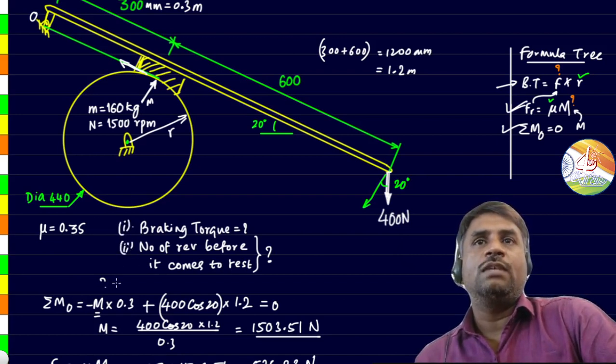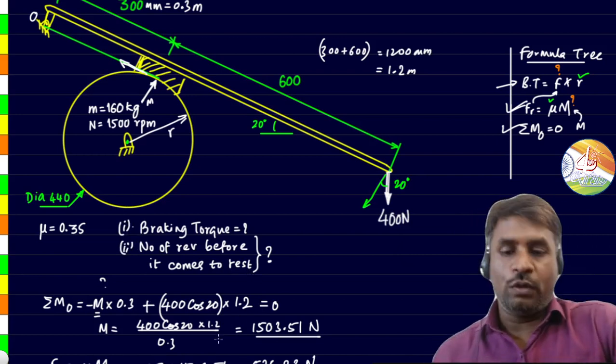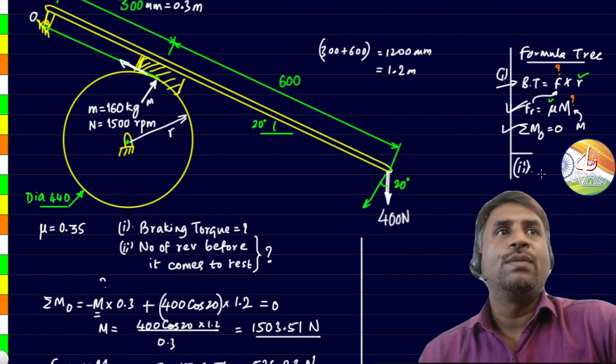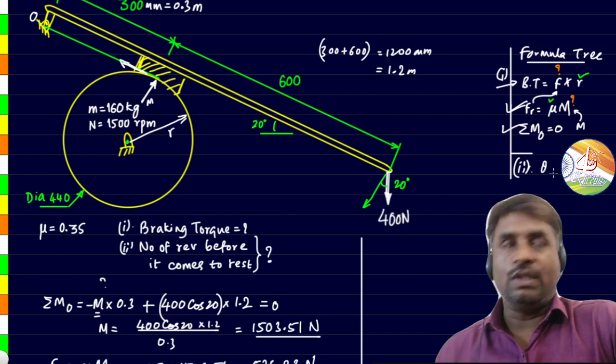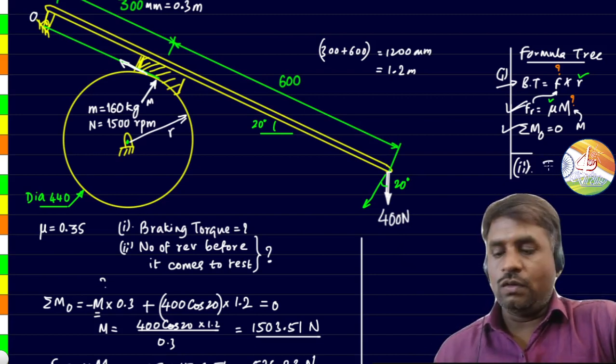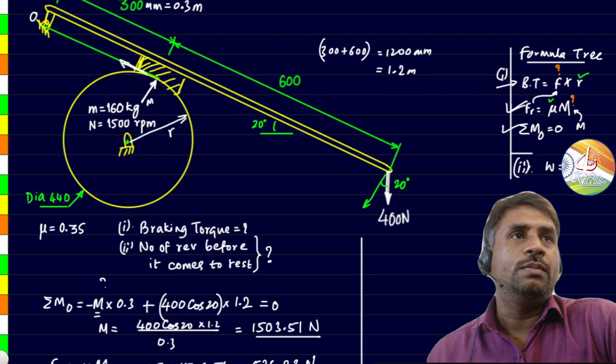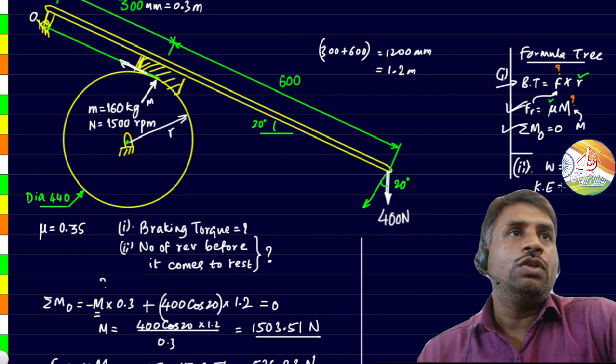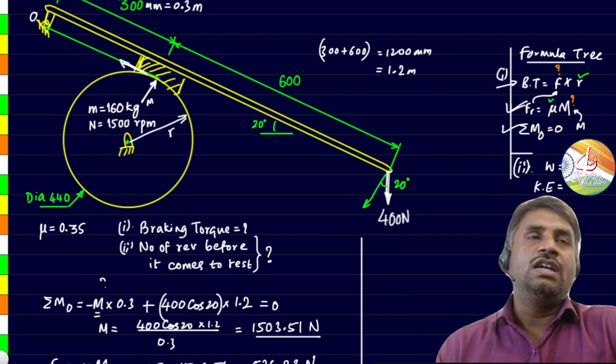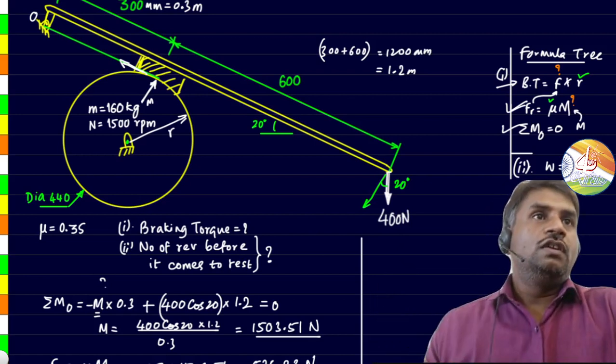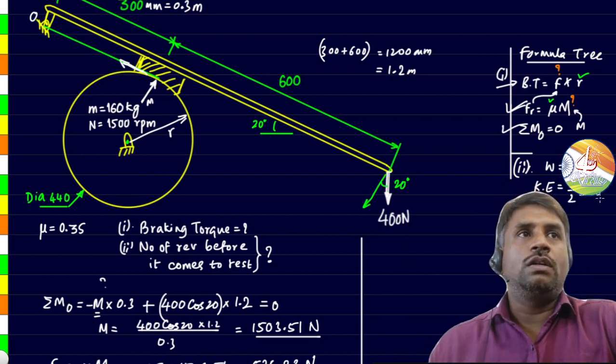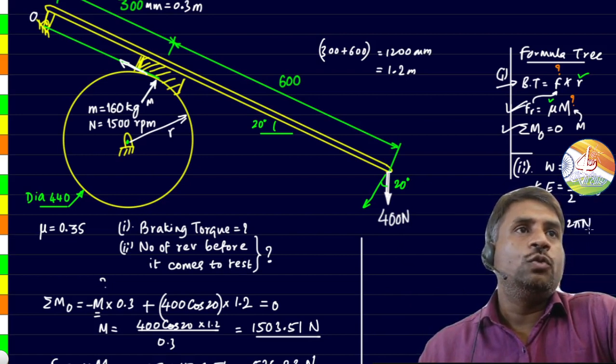Next we have to find the second bit, that is the number of revolutions it undergoes before coming to rest. Let's write down the tree for the second bit. We are interested in finding theta. The formula that provides us with theta is work done. Work done is equal to torque, the braking torque multiplied with theta. Now braking torque has to be equal to the kinetic energy because all the kinetic energy is going to be utilized by the brake in order to stop it. So kinetic energy formula is half I omega square. Omega can be found using 2 pi n by 60, n is known here.